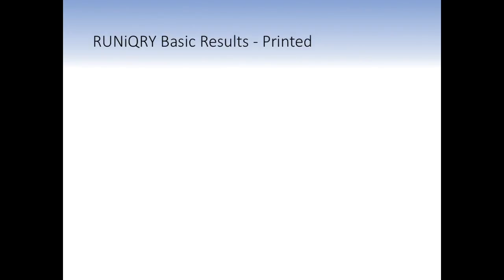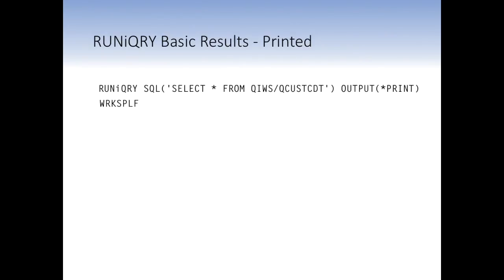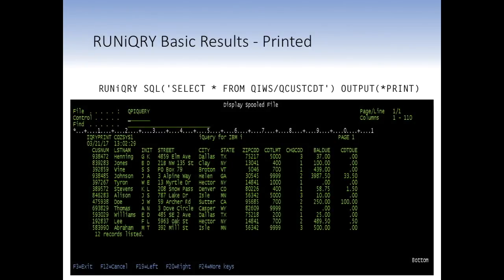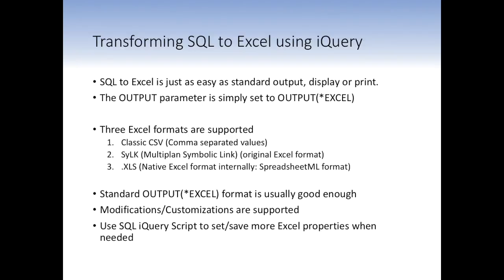Let's look at this again, but this time let's change the command a little bit and go output print. That's all we have to do, and then we're going to work the spool file and take a look. Now we're looking at the spool file for what we just did, and we get similar results when printed. So we have sort of a media-independent output format — you just tell it what output format you want, it writes it. Of course, print and display are pretty standard, been around for 50 years, nothing special about that — except you still can't do that with standard SQL, just with iQuery.